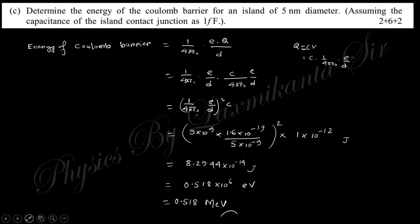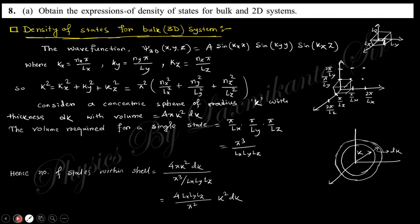This is the coulomb barrier energy. Next is: obtain the expression for the density of states for bulk and two-dimensional material. For bulk material, the wave function corresponding to kₓ gives the energy relation. If you consider a small volume, a single state is π/Lₓ times π/Ly times π/Lz, that is πcubed by volume. The number of states within a cell of radius k with thickness dk is the volume 4πk²dk divided by the volume of a single state.